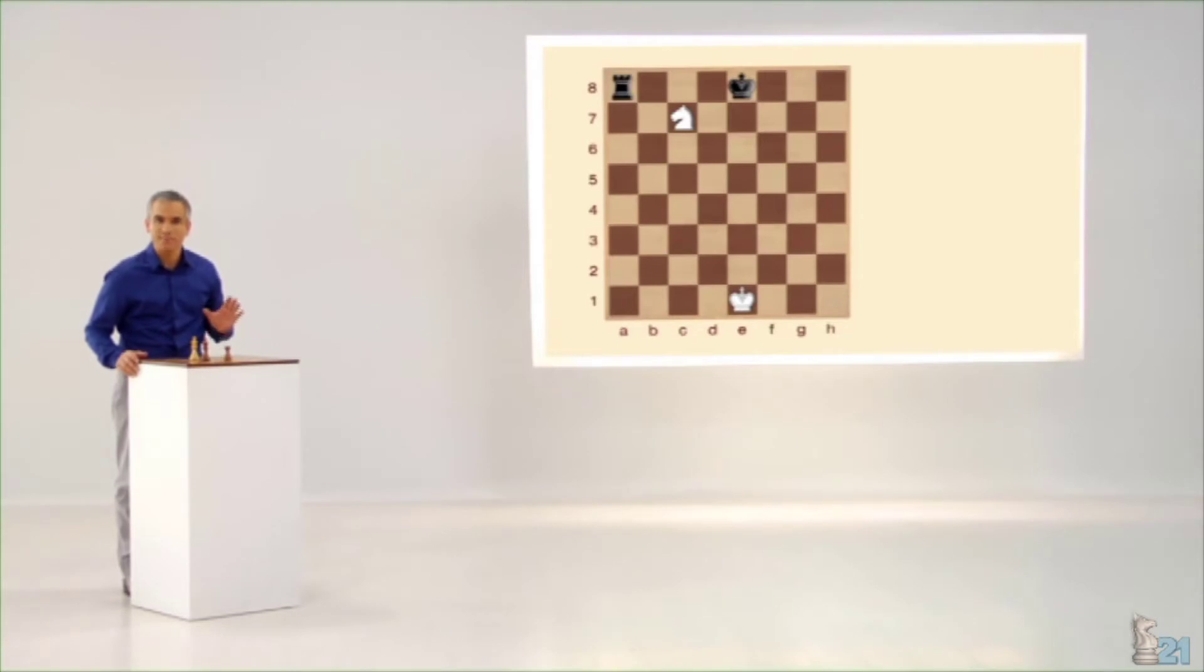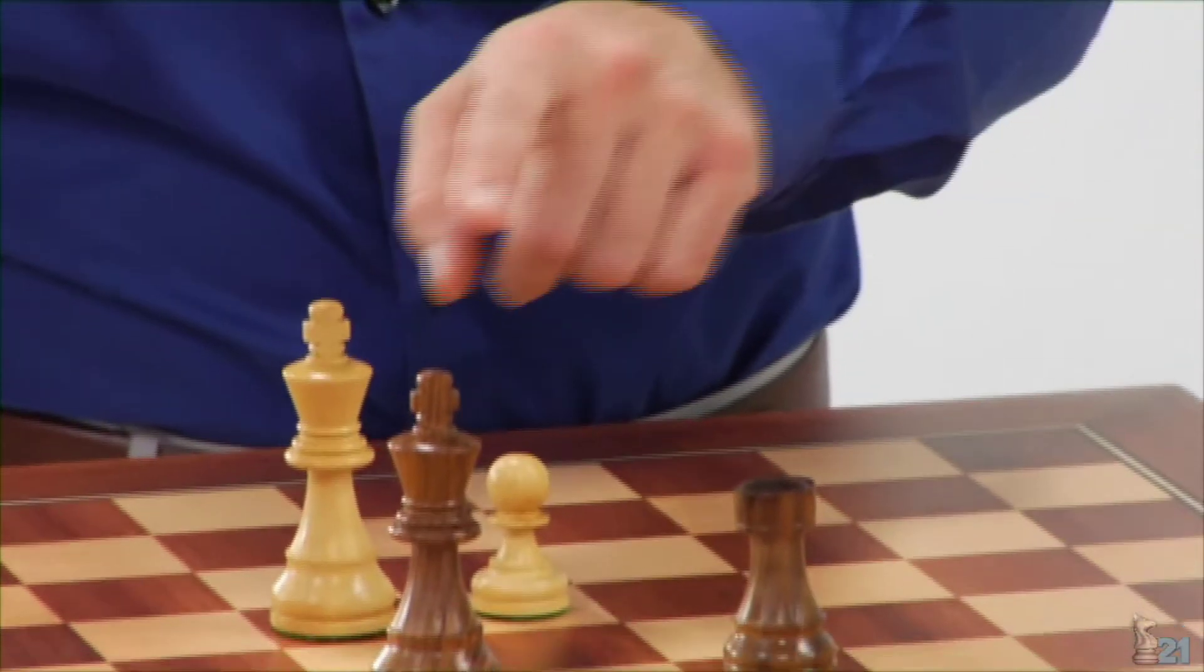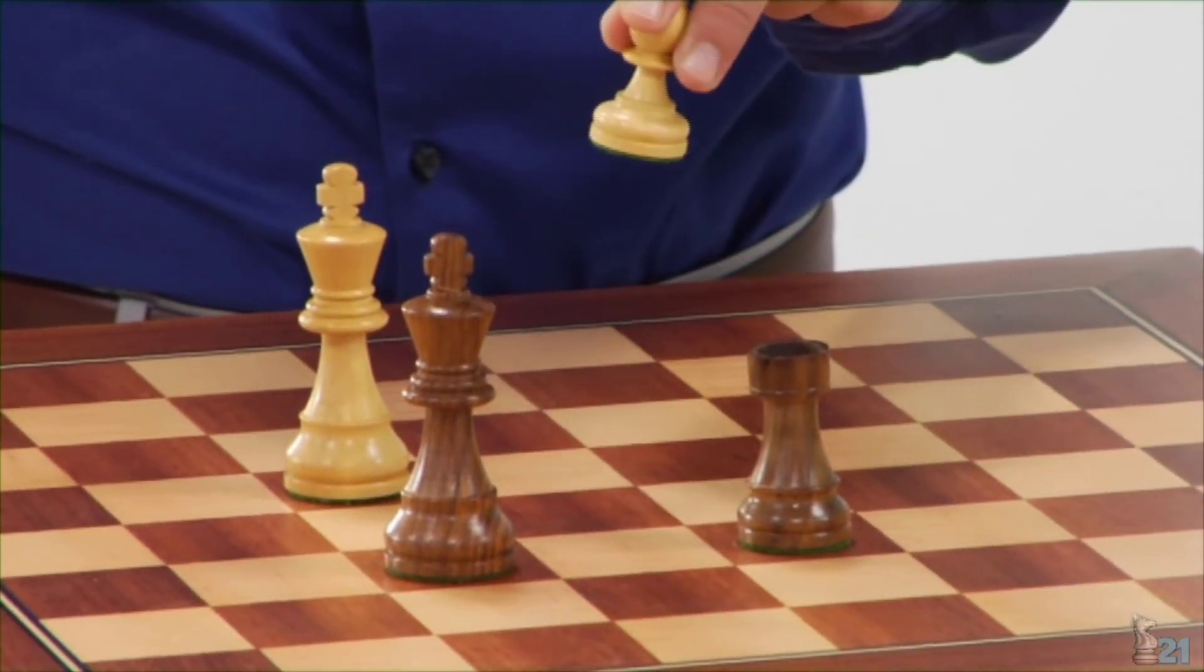Todavía hay una pieza capacitada para realizar un jaque doble. ¿Adivináis cuál es? Efectivamente, es el modesto peón.